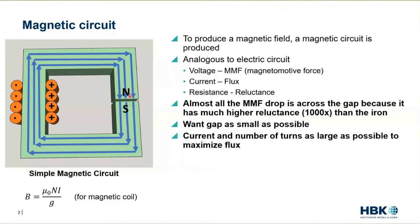Instead of having voltage in this magnetic circuit, we have something called MMF—magnetomotive force—that's analogous to voltage. Instead of having current, these are lines of magnetic flux. And instead of having resistance in the circuit, we have reluctance.